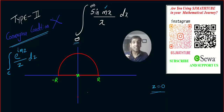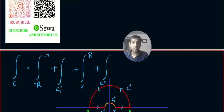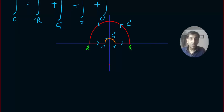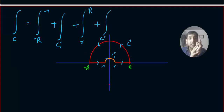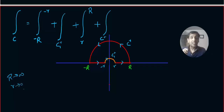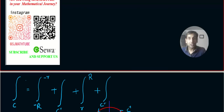If the singularity is on the x-axis, the convergence condition gets violated. We had a similar situation in Type 1, where we made a small circle to avoid the singularity. But in Type 1 we used Cauchy's lemma, which can be used when r tends to infinity as well as when r tends to 0. In Type 2 we use Jordan's lemma, and Jordan's lemma can only be used when r tends to infinity. So this problem has to be tackled in a very different manner.